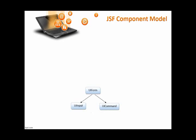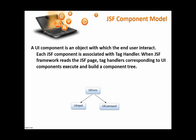As you can see in this diagram, there are three controls: one is the form, another is the input, and the third is the command — that is the button. Whenever the JSF page is executed, the JSF framework creates this tree: form, then input, then command. A UI component is an object with which end users interact. Each JSF component is associated with a tag handler, and when the JSF framework reads the JSF page, those tag handlers execute to build the component tree.